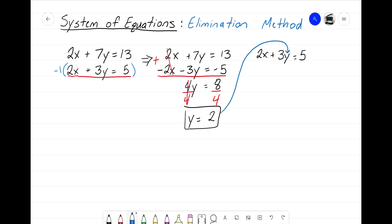So I'm going to rewrite that 2x plus 3y equals 5. But we know what y is. We know that y equals 2. So when I rewrite this equation now, I won't write the y variable. I'll write that y equals 2.